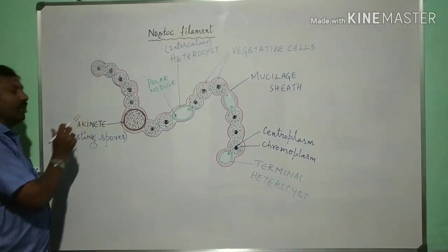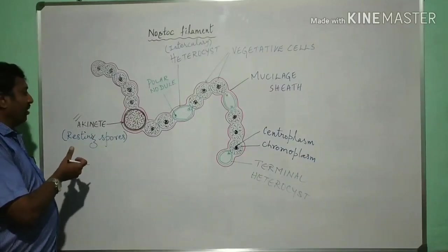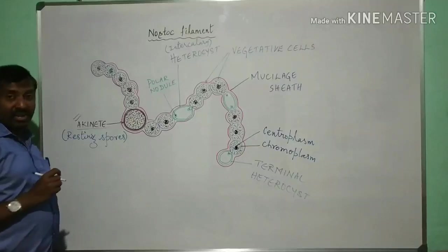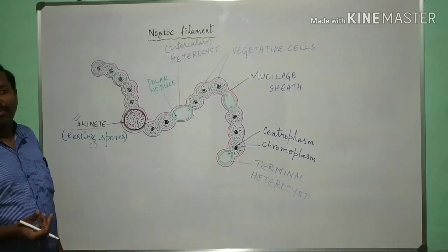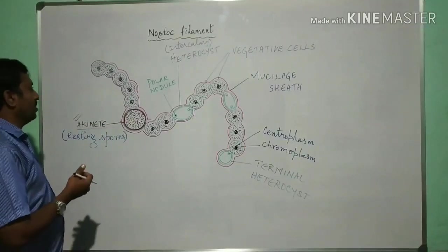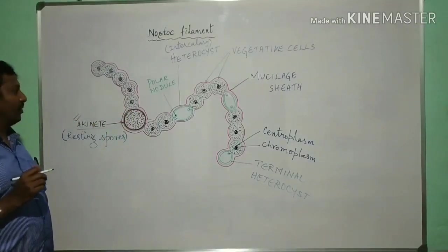These are produced only during unfavorable conditions like water scarcity or dryness, drought etc where they are perennating spores or resting spores. During the return of normal conditions these akinetes help them continue the generation, reproduces also and mainly it is involved in storage of food materials.